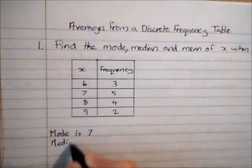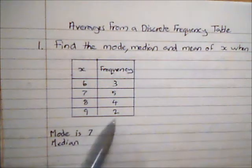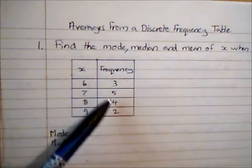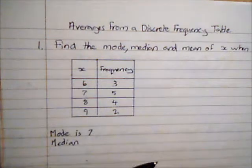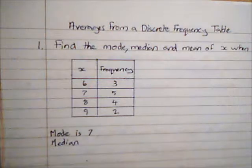The median is slightly more awkward. Let's see how many bits of data we've got. Three plus five plus four plus two gives me 14, so there's 14 pieces of data. The median is going to be between the seventh and the eighth.